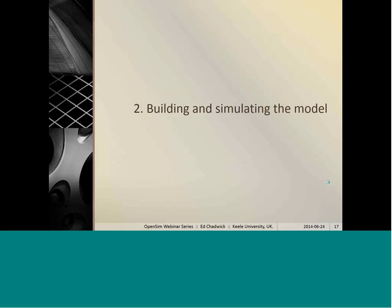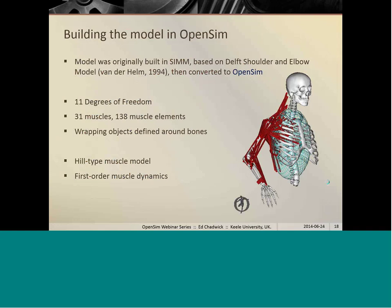Well, we started with a model, the Delft shoulder and elbow model in fact. So we took the parameters from that model, the details of origins and insertions of the muscles, the muscle properties, the muscle parameters, the details of the joints and the wrapping objects and so on. And we built that in SIMM, which was then later converted to OpenSim. So that was our starting point for the model. So this is where we use OpenSim in the pre-processing. That model has 11 degrees of freedom.